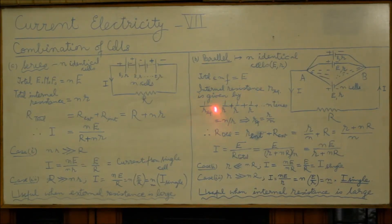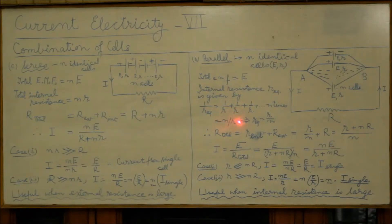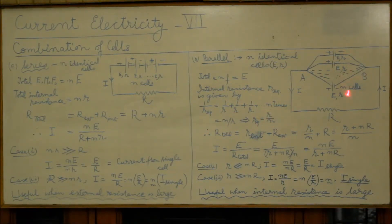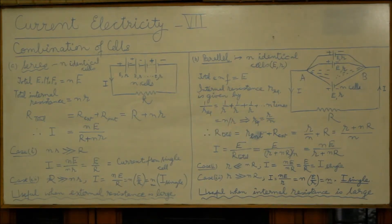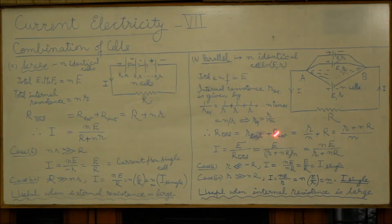That is, 1/r_eq = 1/r + 1/r + 1/r... for n cells, giving n/r. Taking the reciprocal, r_eq comes out to be r/n.